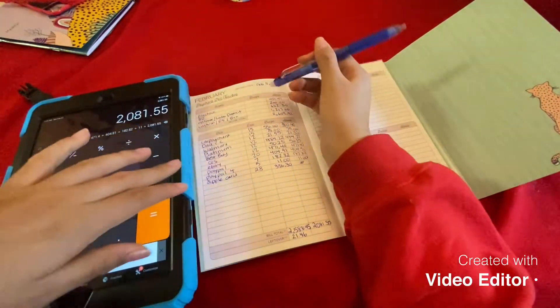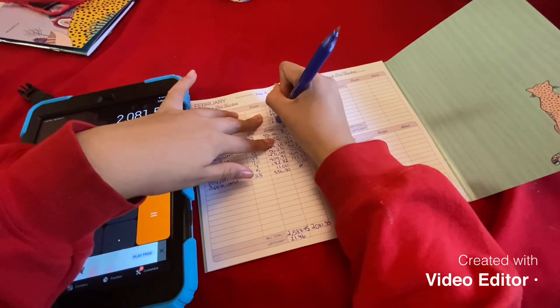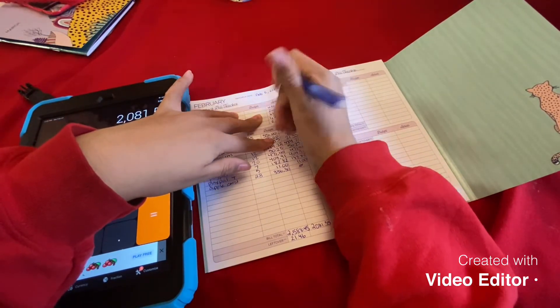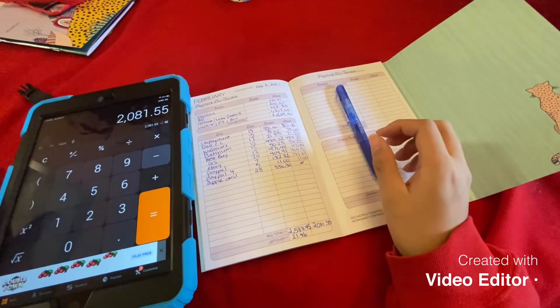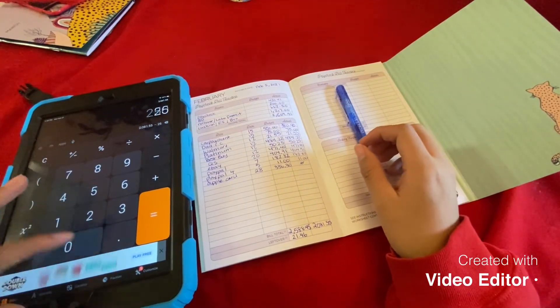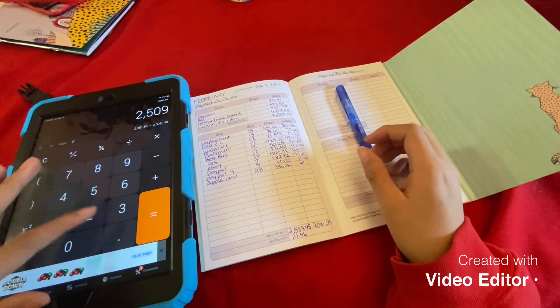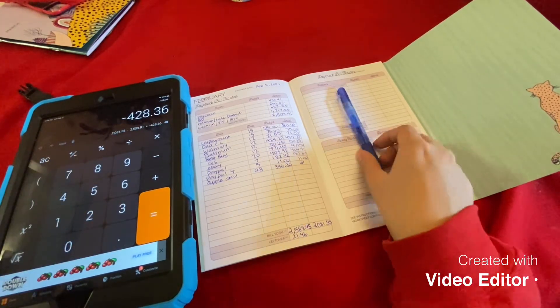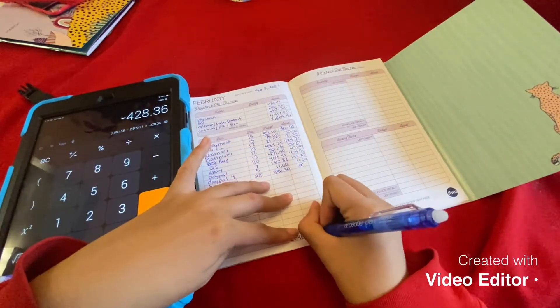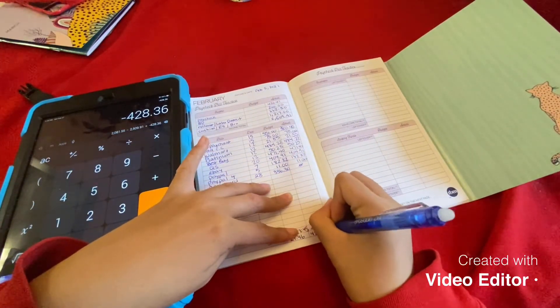I just realized this is for $100 less. So subtract $2509 with $0.91. Yes, we got $428 with $0.36.